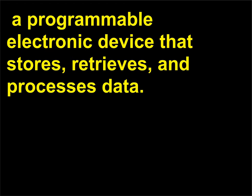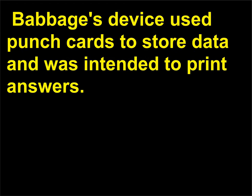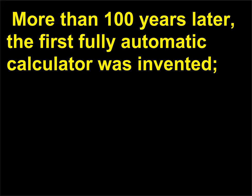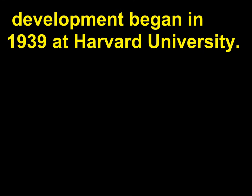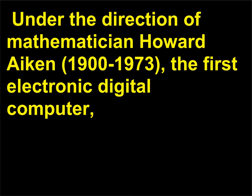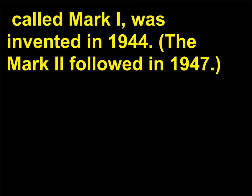Nevertheless, Babbage's never-completed Analytical Engine, on which he began work in 1834, was the forerunner of the modern digital computer — a programmable electronic device that stores, retrieves, and processes data. Babbage's device used punch cards to store data and was intended to print answers. More than 100 years later, the first fully automatic calculator was invented. Development began in 1939 at Harvard University under the direction of mathematician Howard Aiken, 1900–1973. The first electronic digital computer, called Mark I, was invented in 1944. The Mark II followed in 1947.